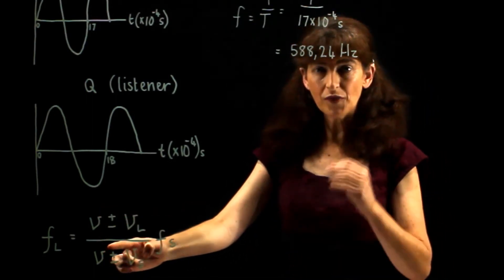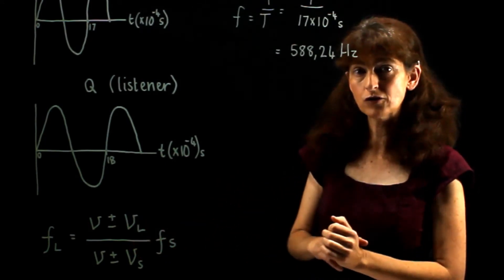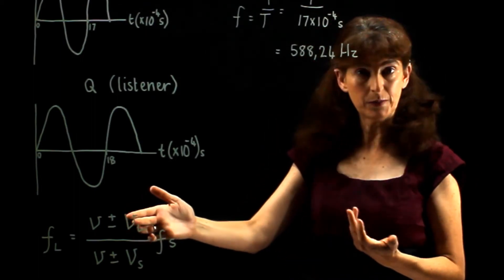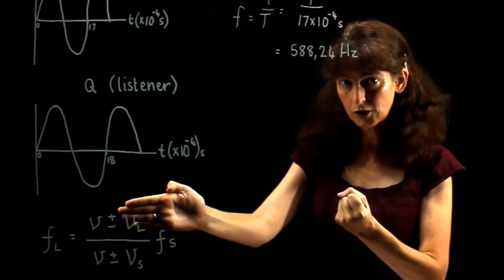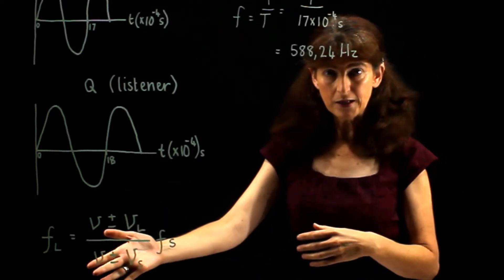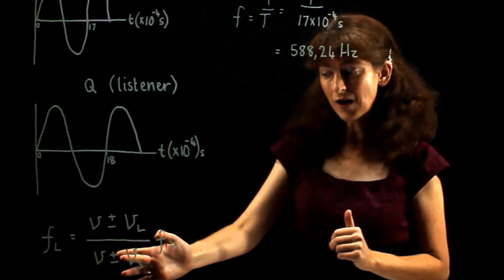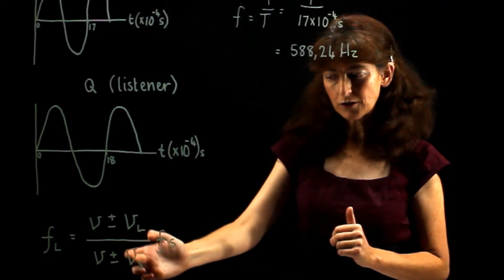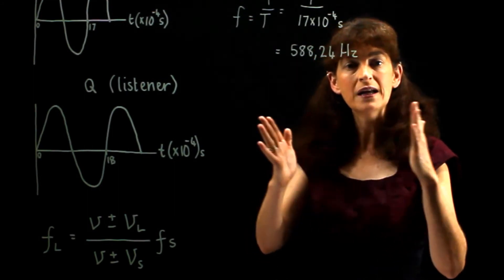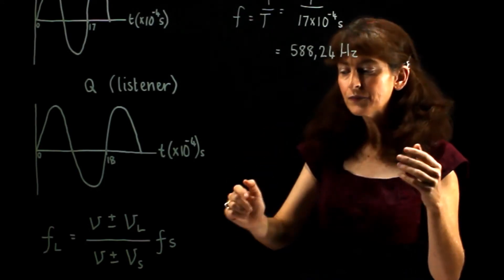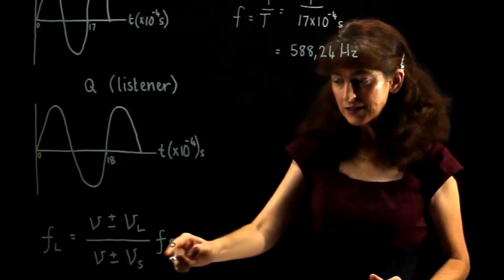We have V, which means the speed of sound. We're told in the question that we must take it as 340 meters per second. Then we have VL, the speed of the listener. We're told that Q is stationary, so that is zero. That part can be removed from this particular form of the equation. Again, we have the speed of sound traveling through air. On these particular conditions, 340 meters per second. We have plus or minus the speed of the source. We're trying to find the speed of the source. Which do we use? That depends upon whether the relative motion is apart or together. Since it's apart, we must use plus down here. If it had been towards, we would have used minus.